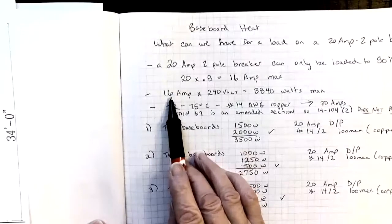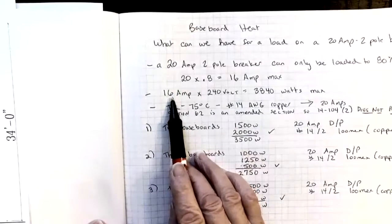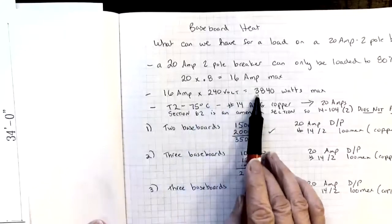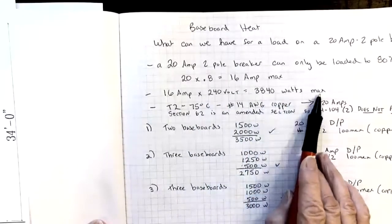When we use watts law, amps times volts, we can figure out the maximum number of watts that we can put on that 20 amp breaker. So 16 times 240 will give us 3840 watts max.